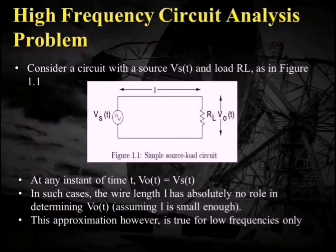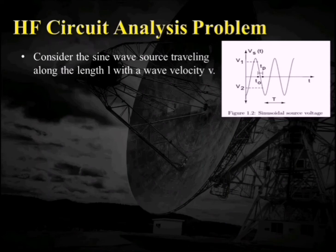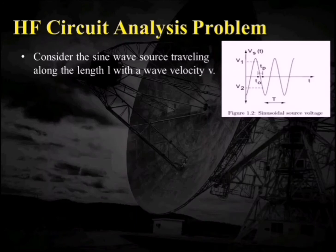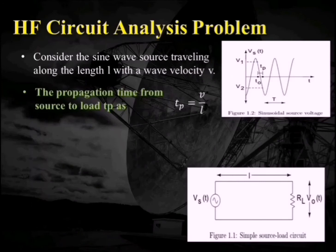Let us consider the sine wave source travelling along the length L with a wave velocity V. The sine wave signal shown in figure 1.2 is getting values at T equal to T0 where the value is V1, and at T0 plus Tp the value changes from V1 to V2. As frequency increases, the time period of this sinusoidal wave will also decrease, so the propagation time will come into action.